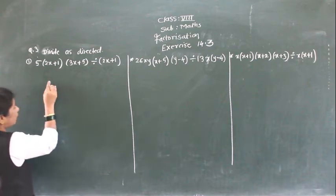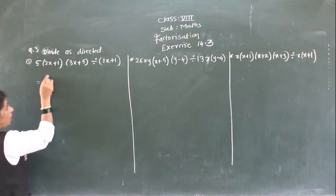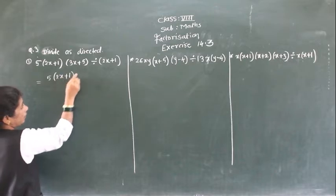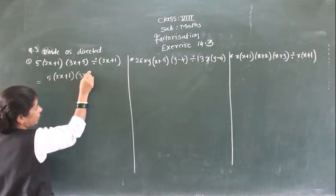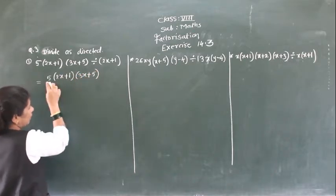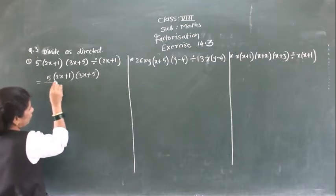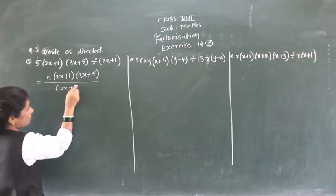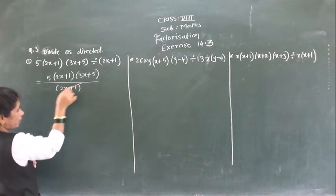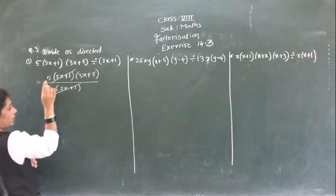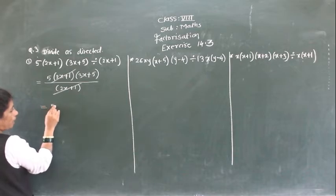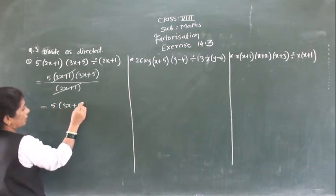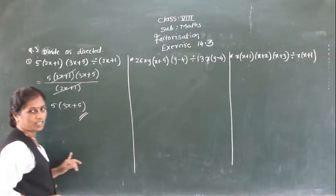So here, 5 × (2x+1) × (3x+5), all three terms are multiplied together, then divided by (2x+1). So this (2x+1), same factor, gets cancelled. So you will get 5(3x+5).